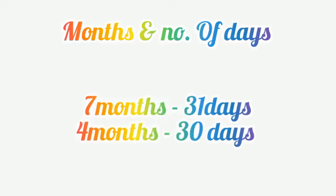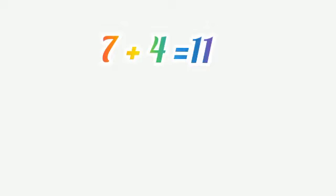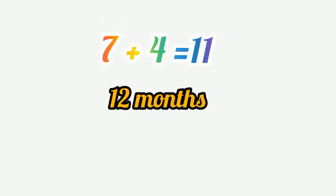Children, next: long months and short months. Long months have 31 days and short months have 30 days. Seven months have 31 days and four months have 30 days. So seven plus four equals 11, but there are 12 months in a year — one more month is missing. What is that?